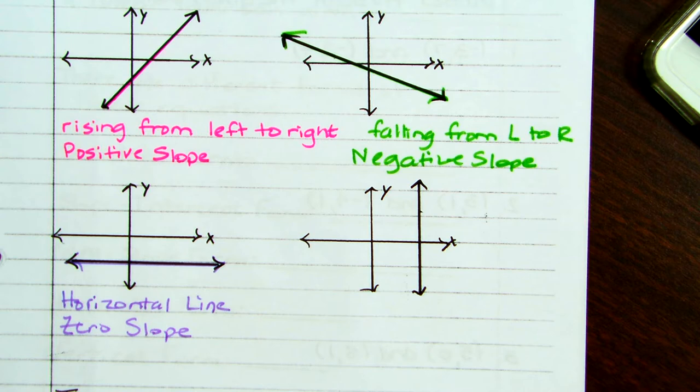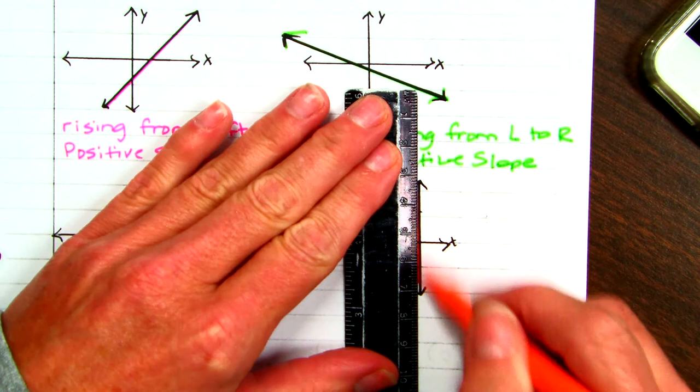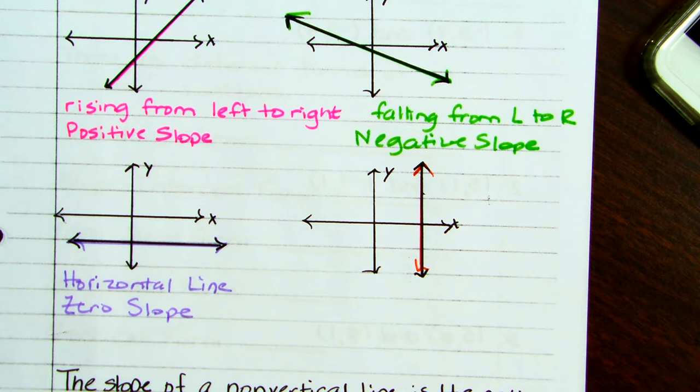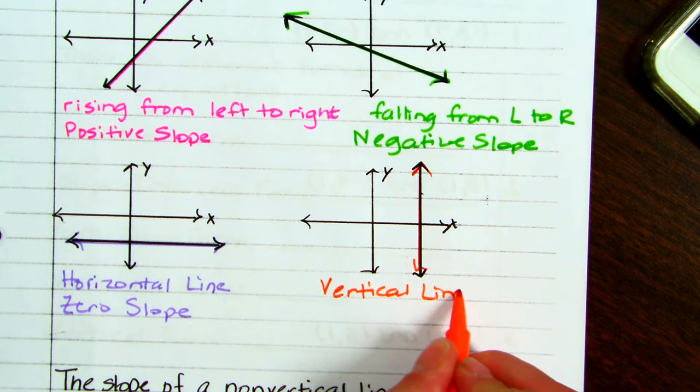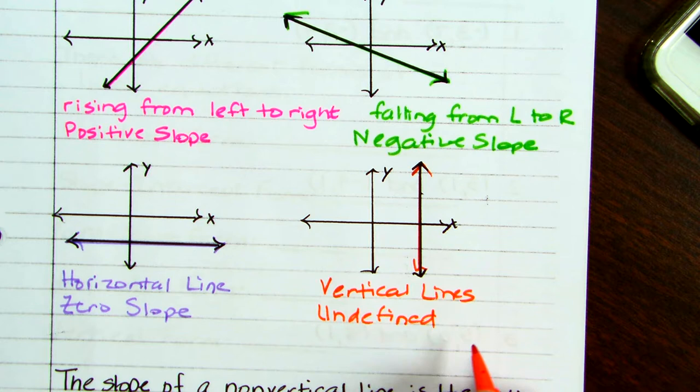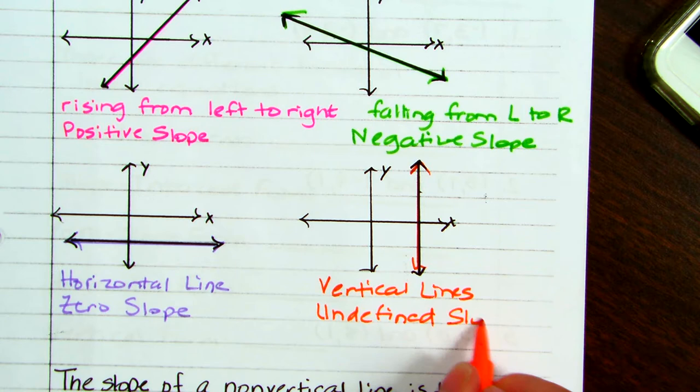When we get to the fourth graph, we have a vertical line. No roads in the real world are going to be vertical — it doesn't have a slope. So vertical lines have an undefined slope, and we'll get to the mathematical reason why.